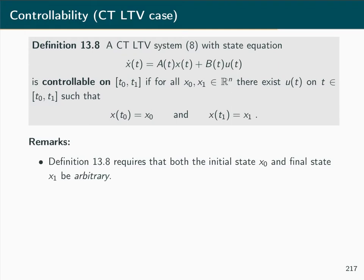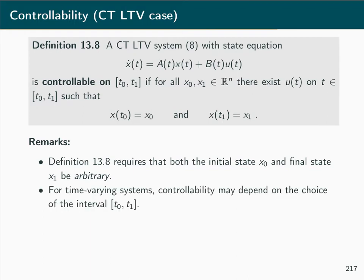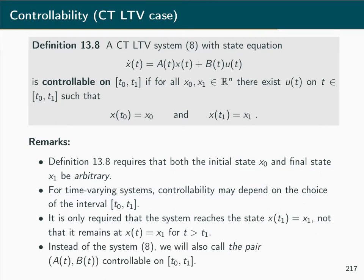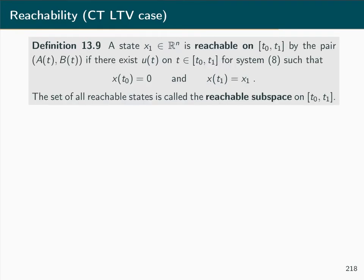As before, definition 13.8 requires that both the initial state x0 and the final state x1 be arbitrary. For general time varying systems, controllability may depend on the choice of the time interval. The definition only requires that the system reaches x1 at time t1, not that it remains at x1 beyond t1. We will also simply call the pair (A, B) controllable on a given time interval.